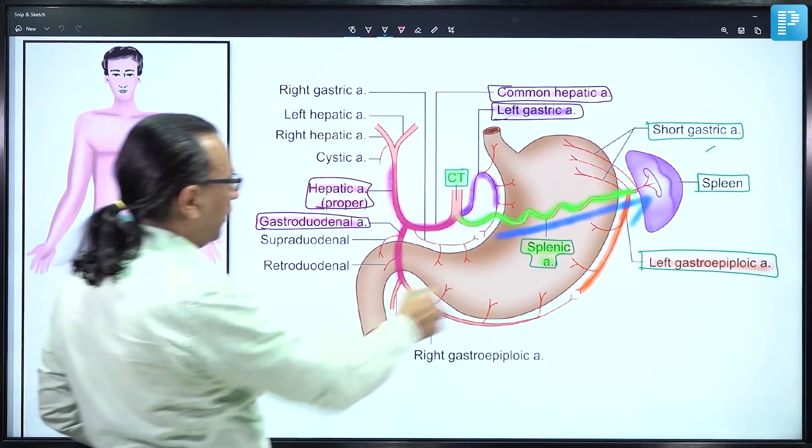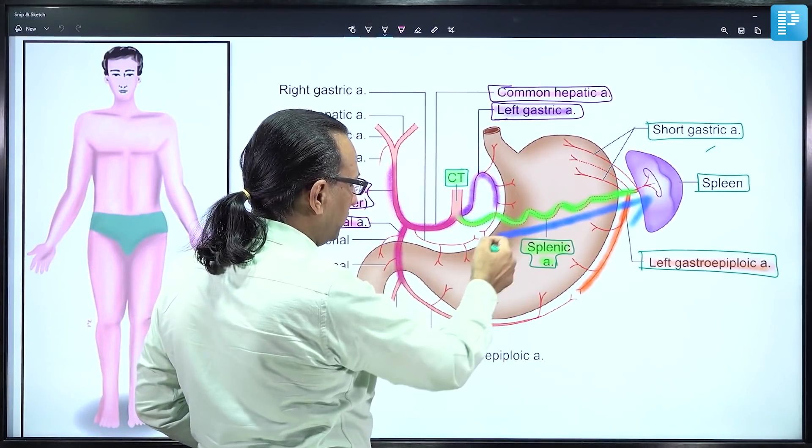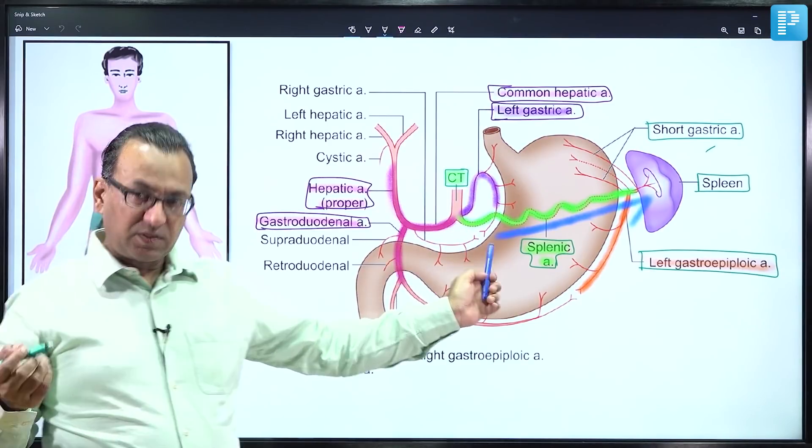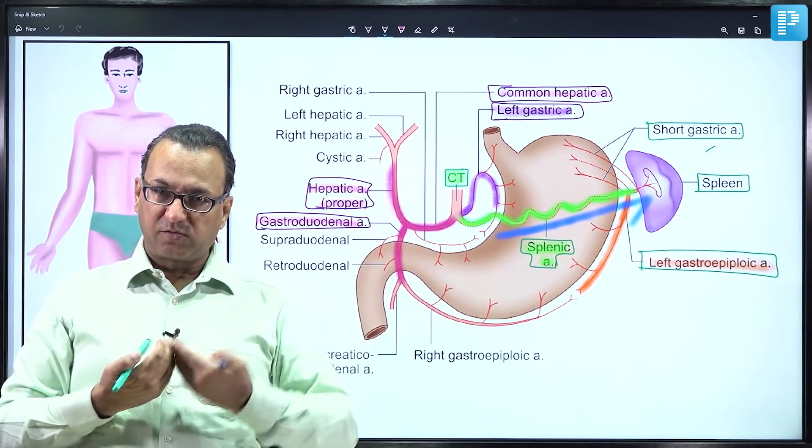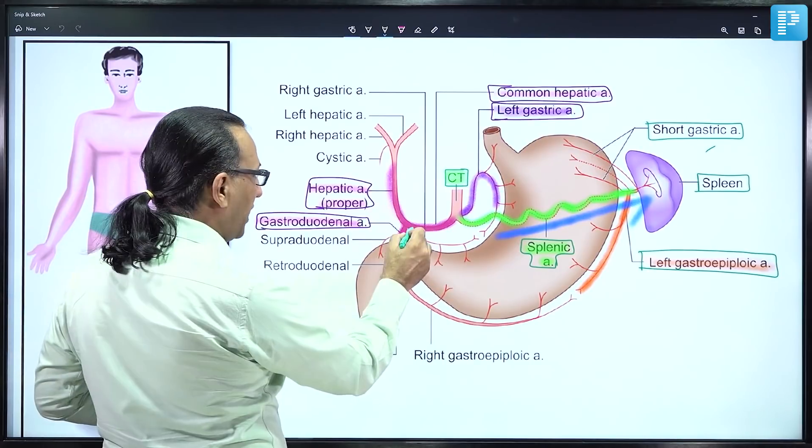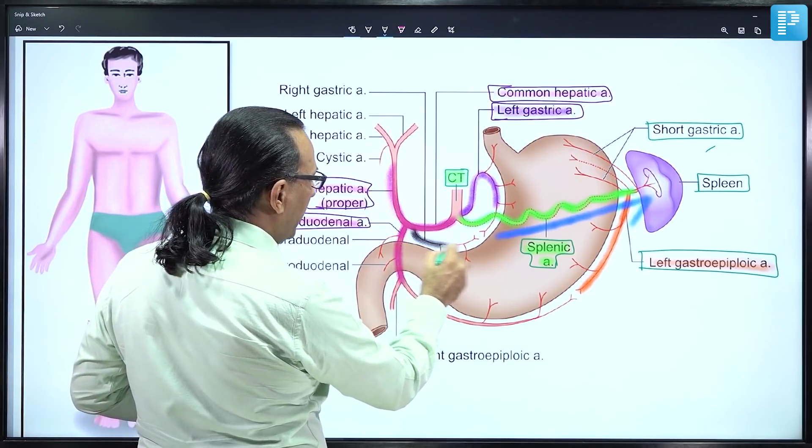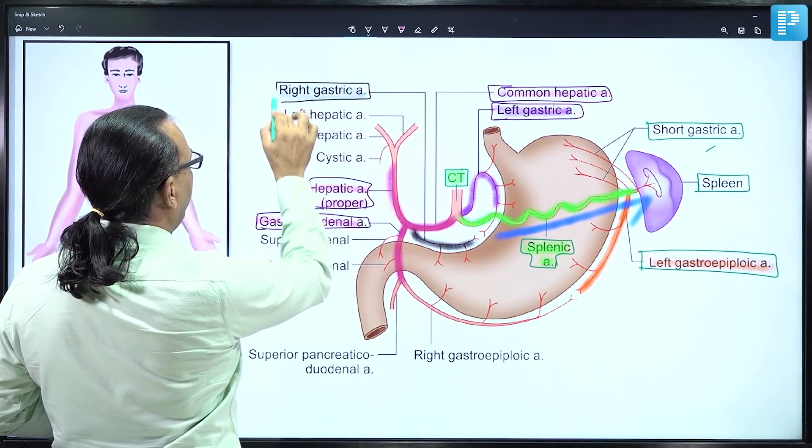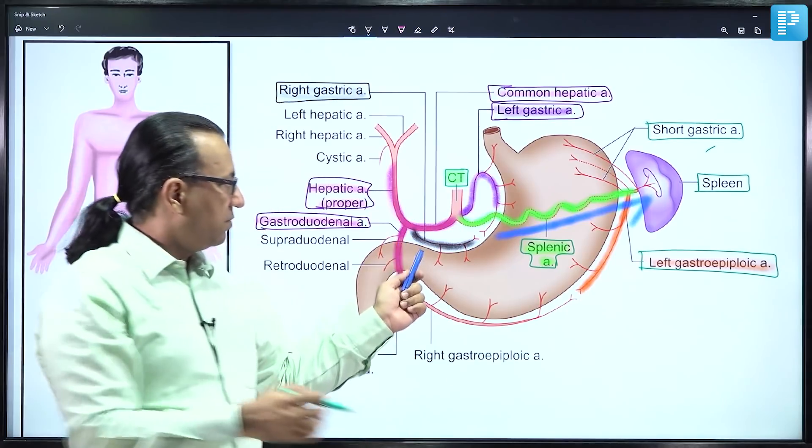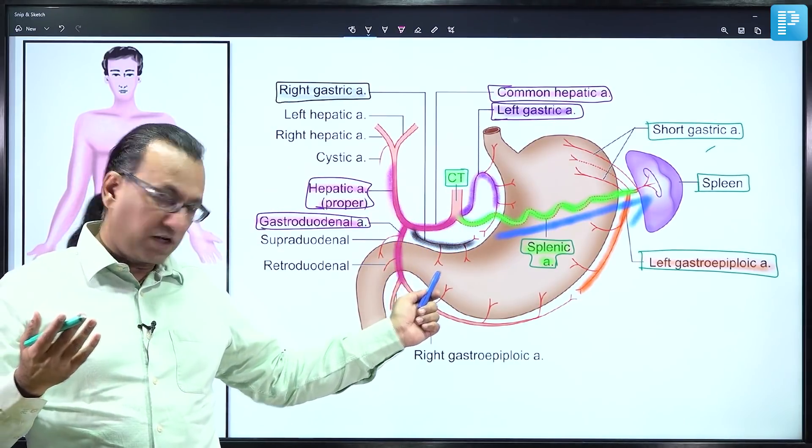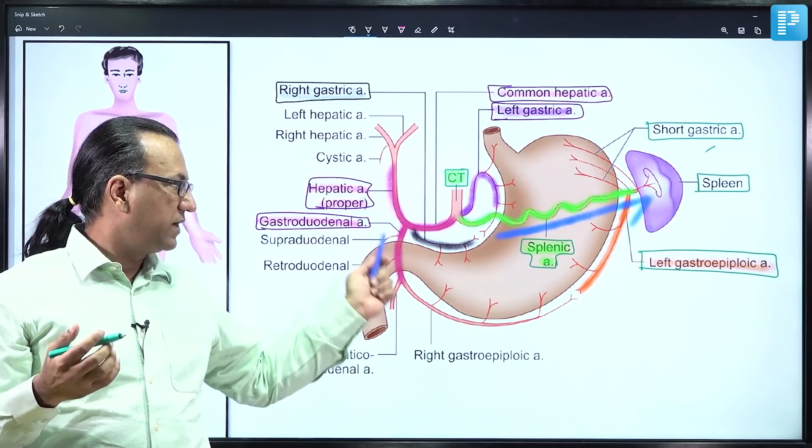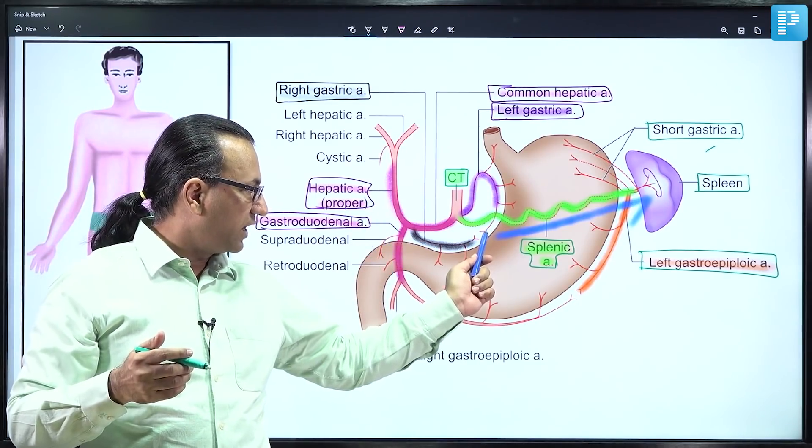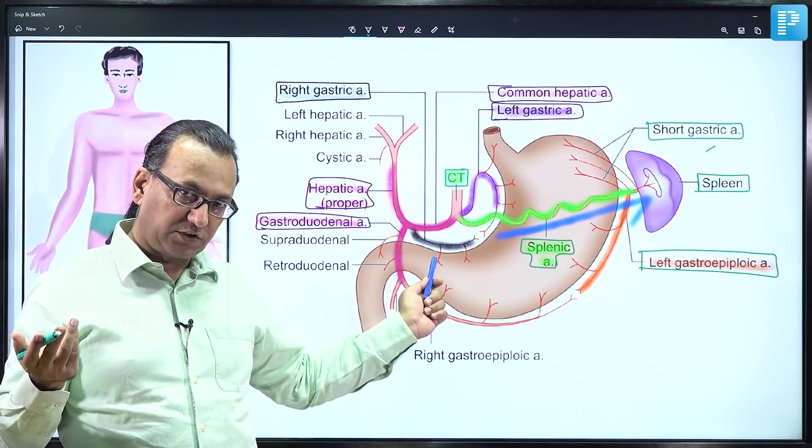Along the lesser curvature of the stomach, you have both the left and right gastric arteries. The right gastric artery is a branch of the common hepatic artery, though it may have variable origin from other arterial trunks. The point is that the right gastric artery runs along the lesser curvature, supplying it.